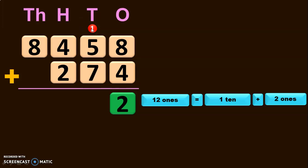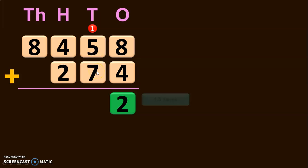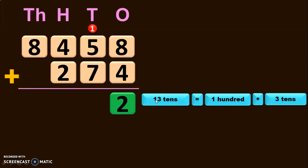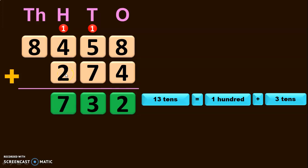Next, add the digits in the tens place. 1 plus 5 will give you 6, and 6 plus 7 will give you 13 tens. So again you will have to regroup the numbers in the tens place. 13 tens is 130, which is nothing but 1 hundred plus 3 tens. So retain the 3 tens in the tens place and carry over the 1 hundred to the hundreds place. Next, add the digits in the hundreds place. 1 plus 4 will give you 5, and 5 plus 2 will give you 7.